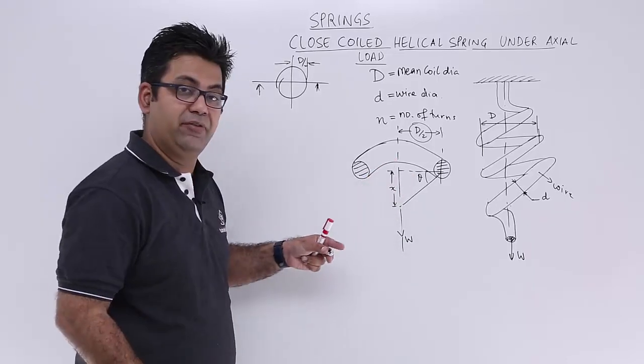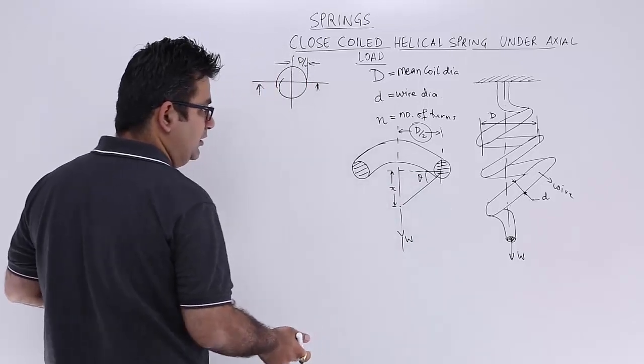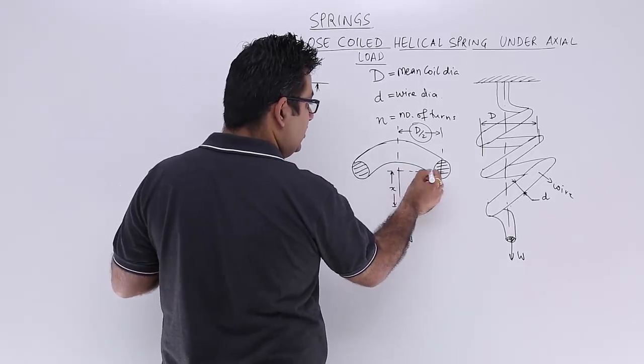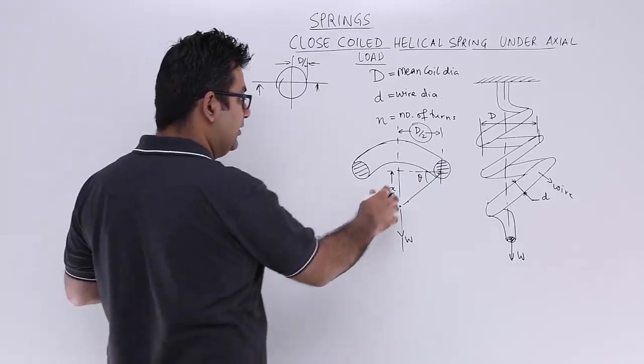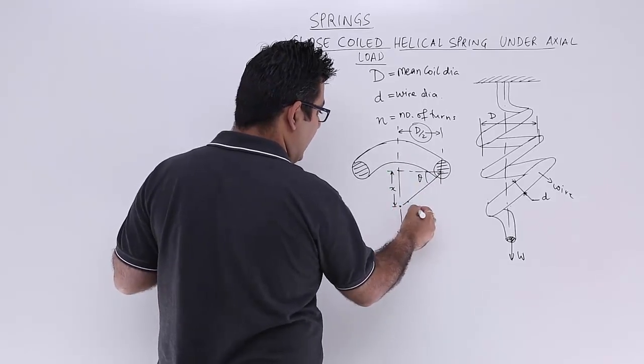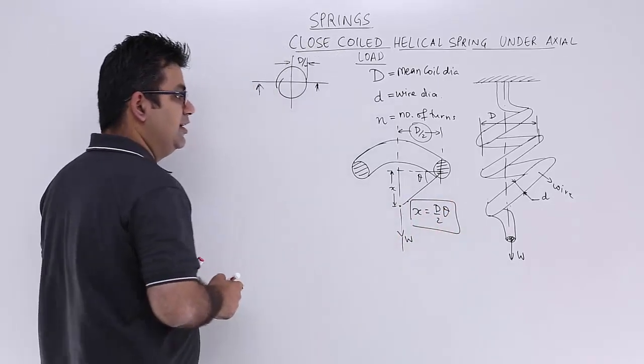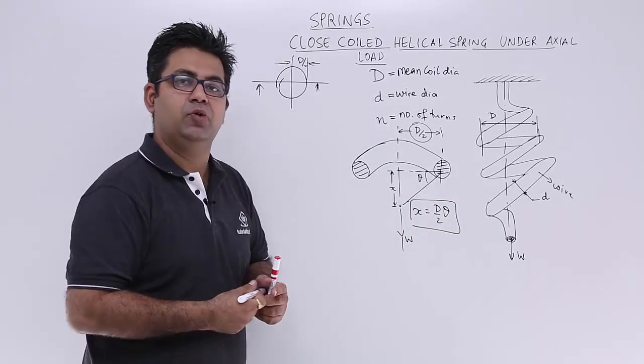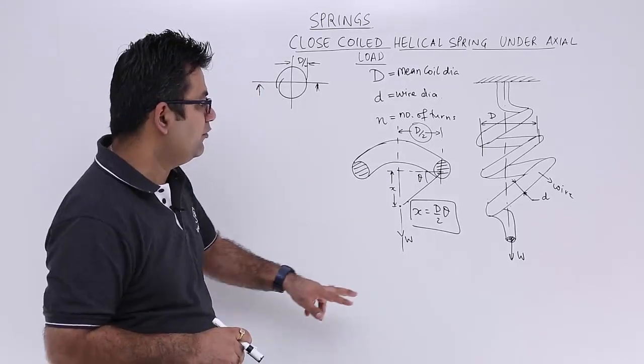So this x is not a very considerable quantity, although I have shown it to be a very big quantity. So this angle will also be very less. So I can say that this length is almost equal to this length. So now we have got this.